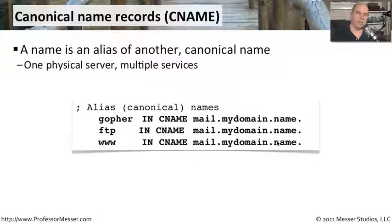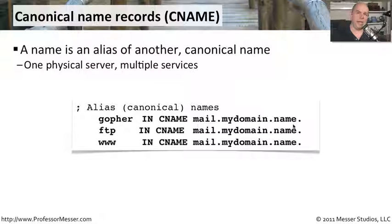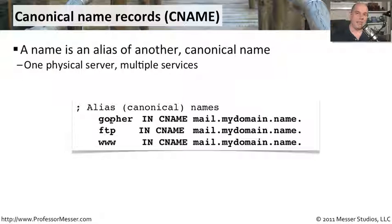It's all running on one computer. But instead of having separate records listing out exactly the same IP address for each, you simply make references to the single server. This helps you later on because if mail.mydomain.name changes, you only have to change the address record for that mail server — you don't have to go back and change every single record for each alias. So the CNAME can really come in handy when administering a large number of systems; it's a one-stop place to make changes.